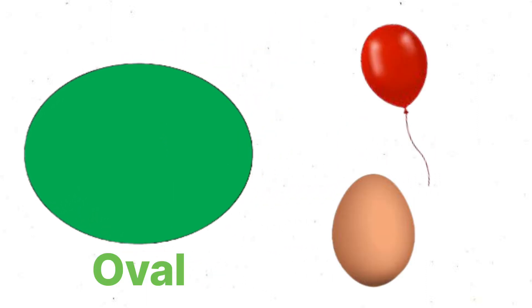I am an Oval and my shape is oval shape. The example of oval shape is balloon and egg.